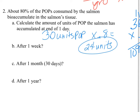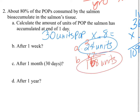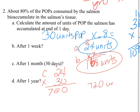For part B, after one week, take the daily accumulation of 24 units and multiply by 7 days, giving 168 units. For part C, after a month of 30 days — we can't just multiply by 4 weeks since that's only 28 days — so we take 24 and multiply by 30, giving 720 units.